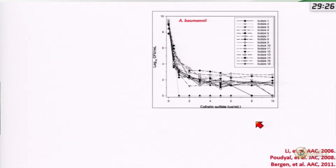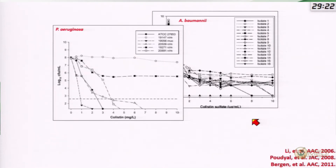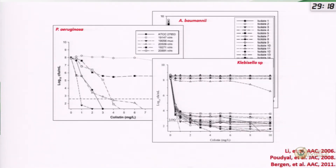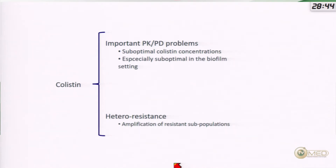A second problem is that colistin has well-described heteroresistance. Even if the laboratory reports susceptibility, there are subpopulations with higher MICs not routinely measured. When the bacterial population is exposed to suboptimal antibiotic concentrations, these resistant subpopulations can be selected and amplified, leading to treatment failure. This has been described for Acinetobacter baumannii, Klebsiella, and Pseudomonas — so we can expect heteroresistance probably across all Enterobacteriaceae. Summarizing: colistin, often our last alternative, has important PK/PD problems with suboptimal concentrations especially in biofilm, plus the problem of resistance emergence.